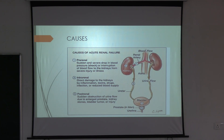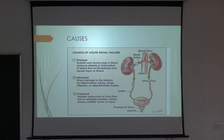Pre-renal refers to a sudden and severe drop in blood pressure or interruption of blood flow to the kidneys — i.e., reduced kidney blood supply. Intra-renal refers to damage to the kidney parenchyma itself. Post-renal refers to obstruction to the urinary flow, which can be anywhere from the ureter to the bladder and urethra.